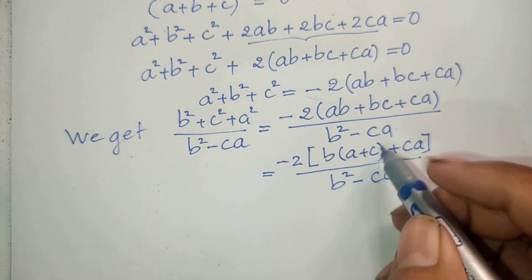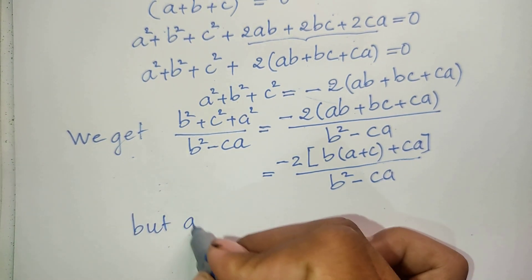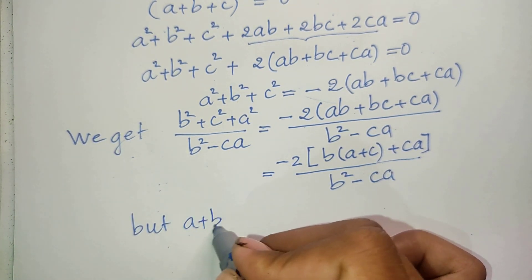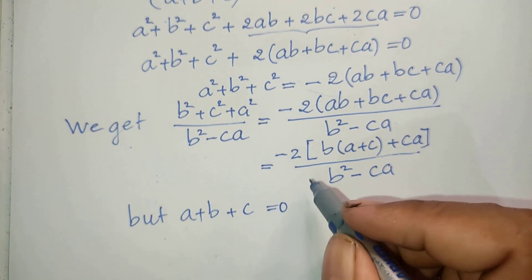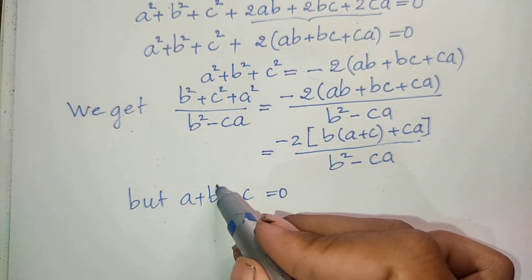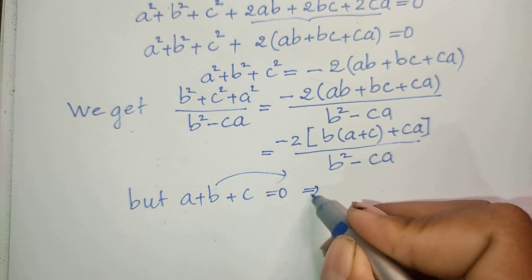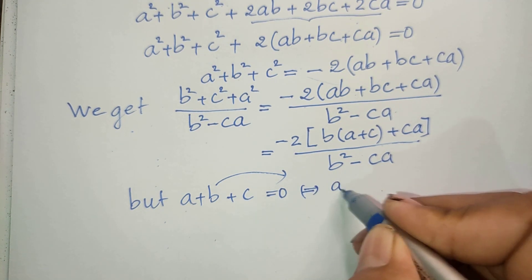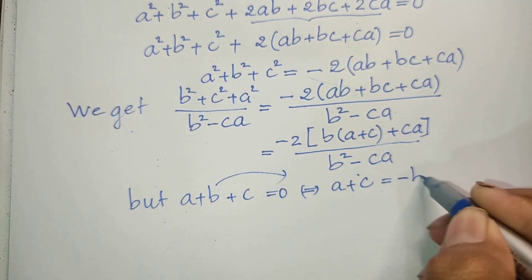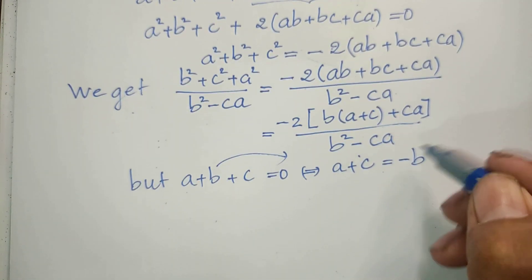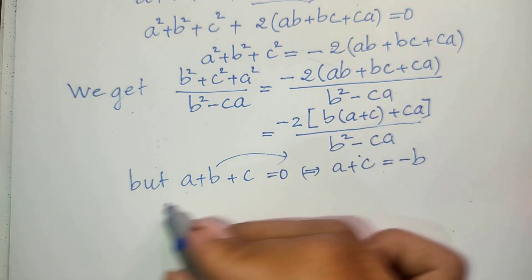Now, since a plus b plus c equals zero, I move b to the right side, so a plus c equals negative b. I now substitute this into the expression, replacing a plus c with negative b.